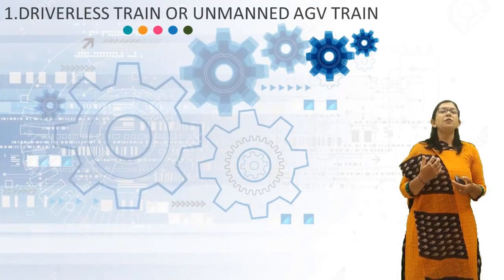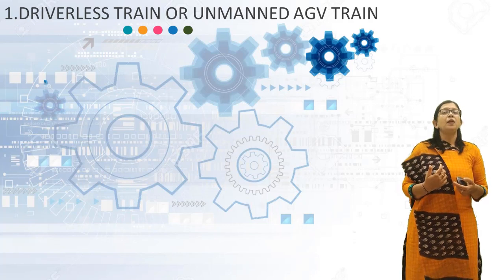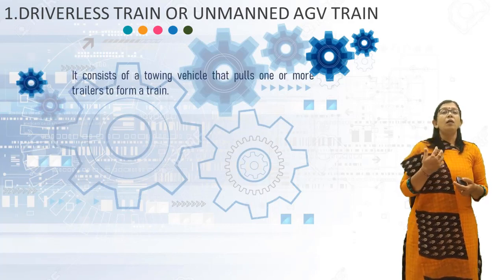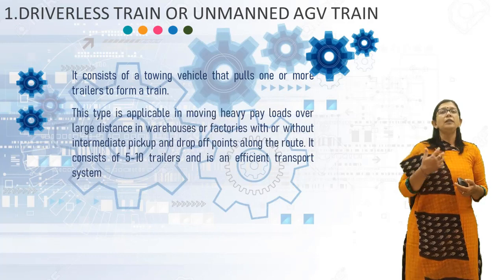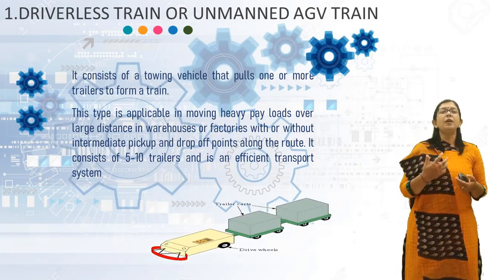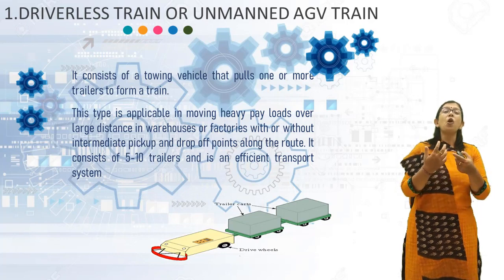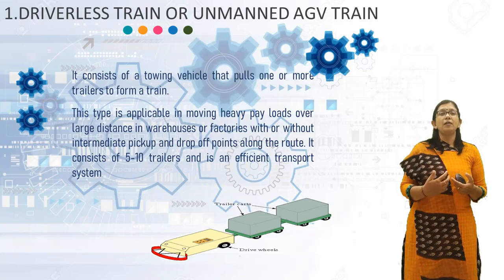First, we will discuss the Driverless or Unmanned AGV Train. It consists of a towing vehicle that pulls one or more trailers to form a train. This type is applicable in moving heavy payloads over large distances in warehouses or factories, with or without intermediate pick-up and drop-off points along the route. It consists of 5 to 10 train trailers as an efficient transport system.